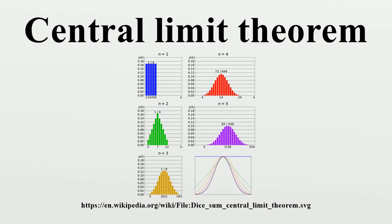By the law of large numbers, the sample averages converge in probability and almost surely to the expected value μ as n → ∞. The classical central limit theorem describes the size and the distributional form of the stochastic fluctuations around the deterministic number μ during this convergence. More precisely, it states that as n gets larger, the distribution of the difference between the sample average Sn and its limit μ, when multiplied by the factor √n, approximates the normal distribution with mean zero and variance σ². For large enough n, the distribution of Sn is close to the normal distribution with mean μ and variance σ²/n.